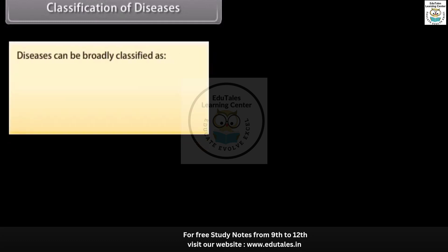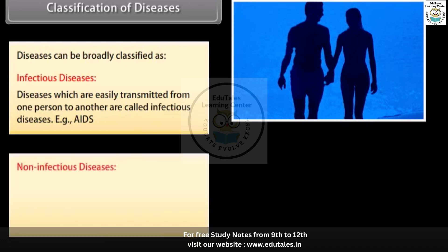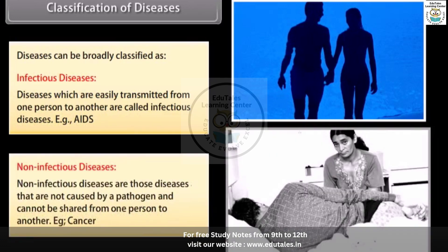Diseases can be broadly classified as infectious diseases and non-infectious diseases. Diseases which are easily transmitted from one person to another are called infectious diseases — for example, AIDS. Non-infectious diseases are those not caused by a pathogen and cannot be shared from one person to another — for example, cancer.